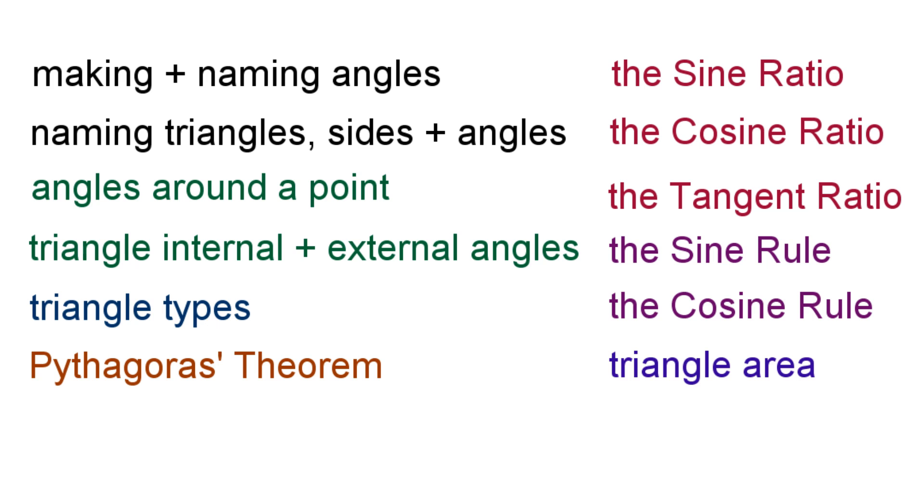One, making and naming angles. Two, naming triangles, their sides and their angles. Three, angles around a point. Four, triangle internal and external angles. Five, triangle types. Six, Pythagoras's theorem. Seven, the sine ratio. Eight, the cosine ratio. Nine, the tangent ratio. Ten, the sine rule. Eleven, the cosine rule. Twelve, the area of a triangle.